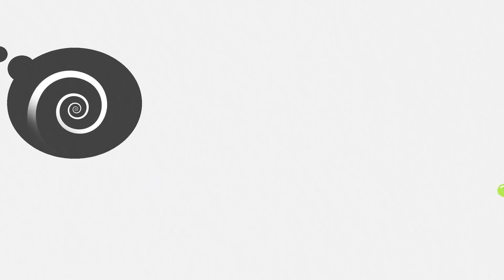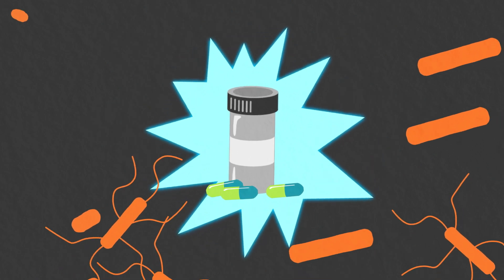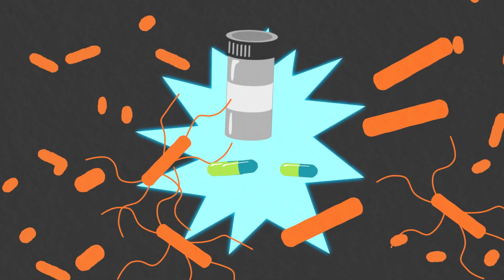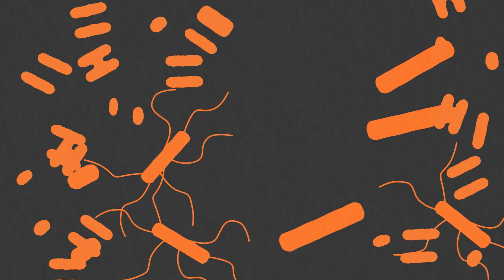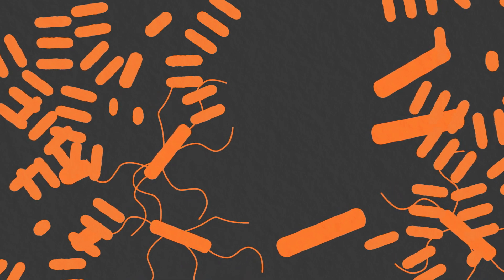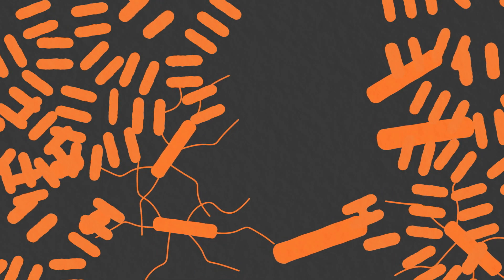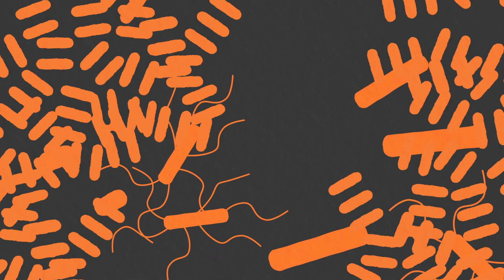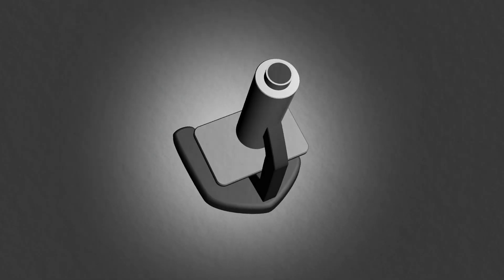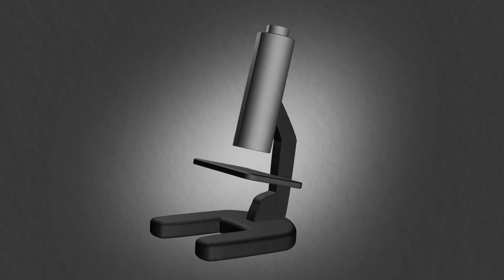The most commonly used treatments for C. diff. are antibiotics. Since C. diff. is intrinsically resistant to many types of antibiotics, which is why it survives when antibiotics kill other bacteria, researchers have been looking for more effective treatments. Studies looking at therapies to address the role of the immune system in treating or preventing C. diff. infection are underway.